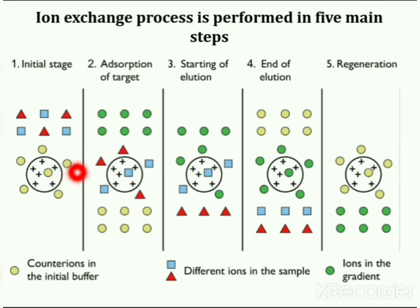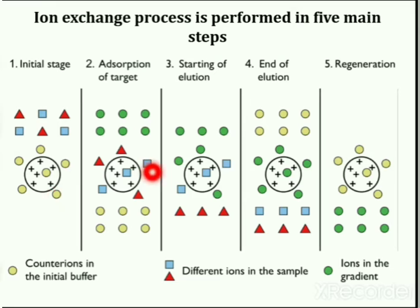Here you can see a column filled with ion exchange resin. Particles in yellow are counter ions in the initial buffer. Blue and red particles represent different ions in the sample, and green particles are ions in the eluent gradient.